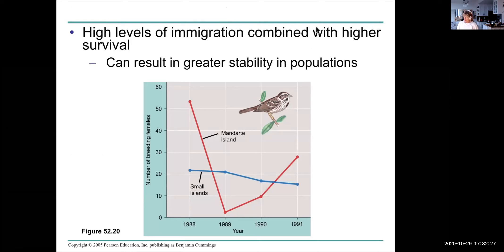Another example can be seen here with the Mandarte Island example. It shows here the number of breeding females on the y-axis and the year on the x-axis. What happened over time? On this one island, we see that this population of finch dropped severely, probably because of a hard winter, and then went up again in population size. It fluctuated considerably between 1988 and 1991. But there are other populations that exist on different islands. The population of those individuals stayed about the same. They didn't really fluctuate very much because the individuals could move from island to island, keeping the population more stable overall.